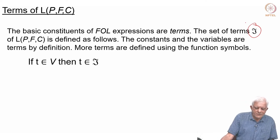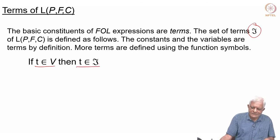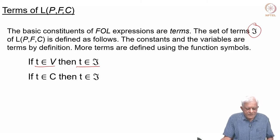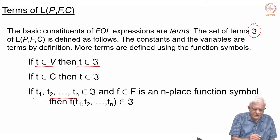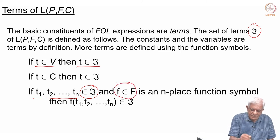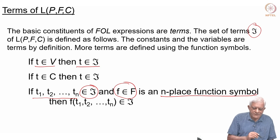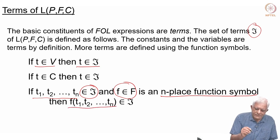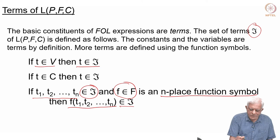Formally, if T belongs to the set of variables then T belongs to the set of terms — all variables are terms. If T belongs to the set of constants it belongs to the set of terms. Then if there are n terms T1, T2, up to Tn, and there is a function symbol F which belongs to the set of function symbols and it is an n-place function symbol, then the expression F(T1, T2, ..., Tn) is also a term and belongs to the set of terms.